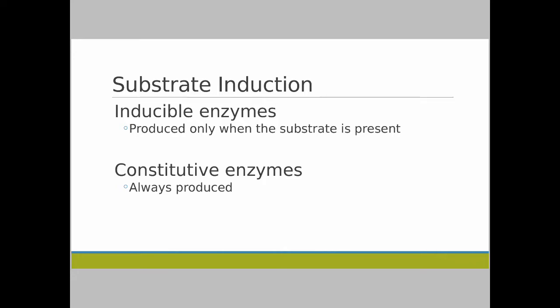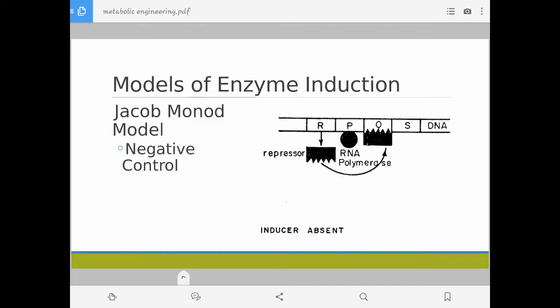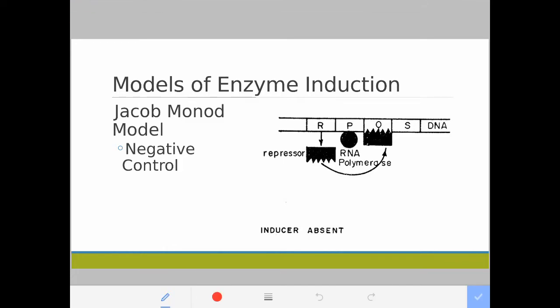One model for substrate induction is the Jacob-Monod model for negative control. The production of inducible enzymes is controlled at the gene level. The cells do not produce these enzymes when they are not needed, because production of large proteins like enzymes is very energetically expensive. The cells know they need those enzymes through substrate induction. This is one model for how that works.